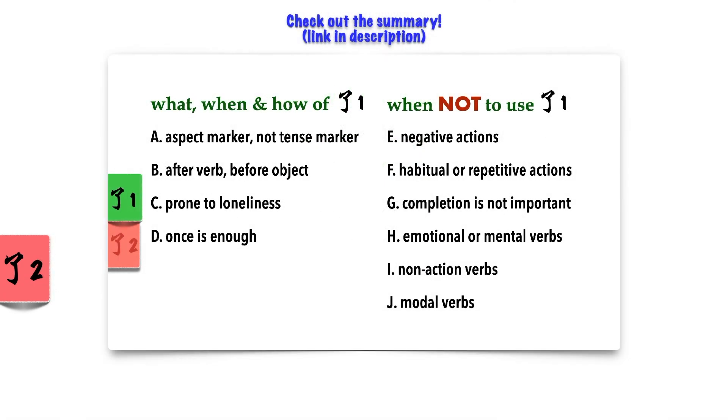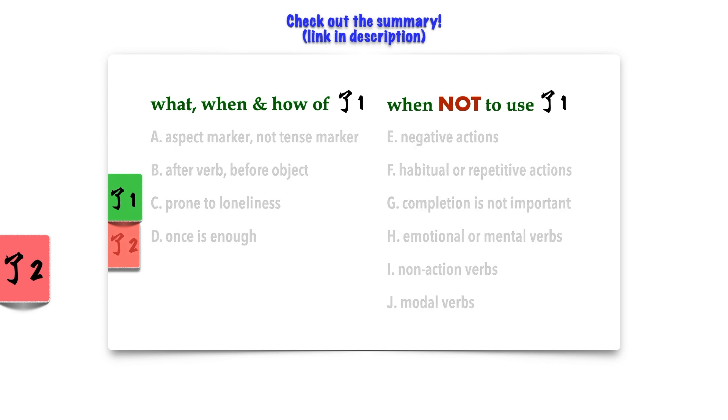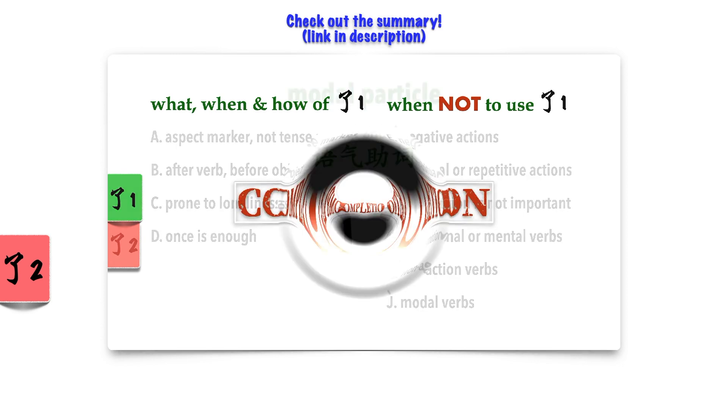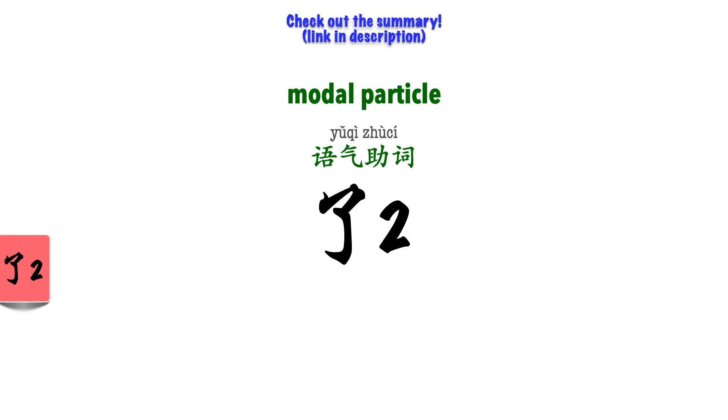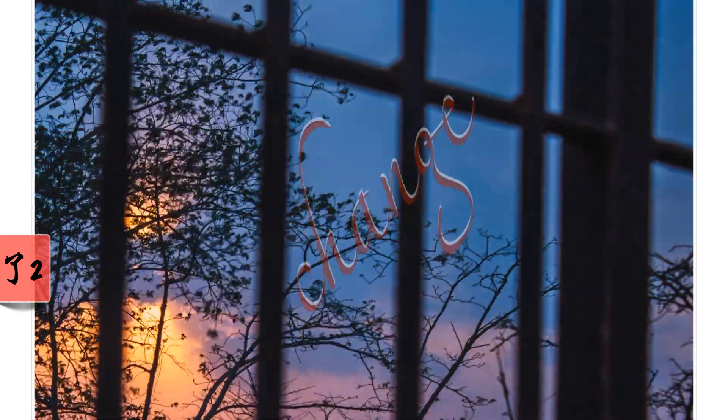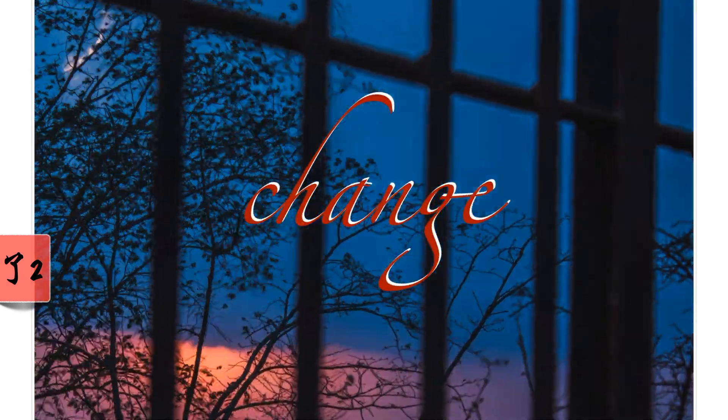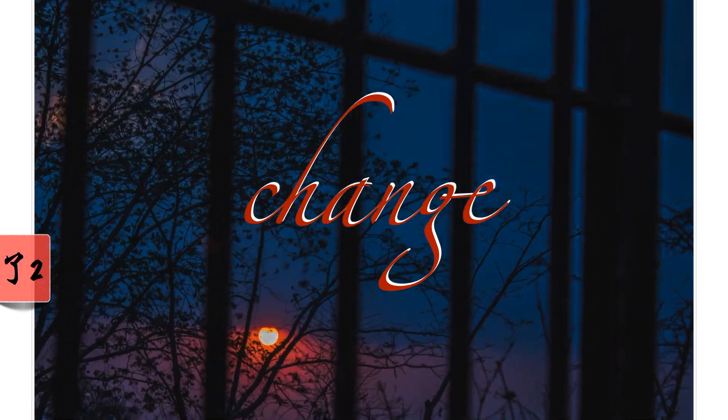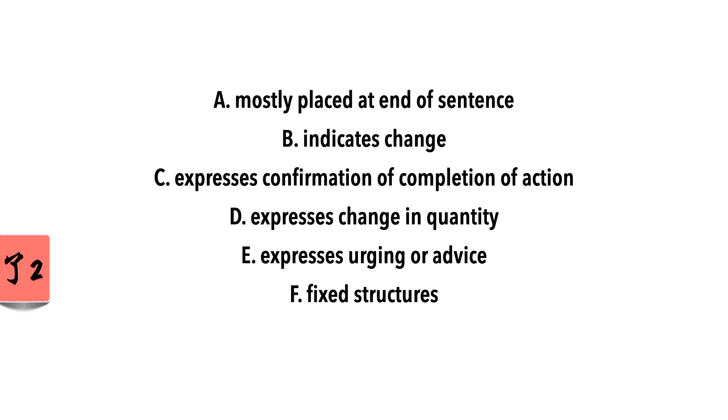Although there are many things to bear in mind about 勒1, fundamentally it only expresses one thing, the completion of an action. Similarly, 勒2, despite having quite a few meanings on a surface level, has basically one most important underlying feature that you should familiarize yourself with, and that is change. First off, here's an overview of what we're going to learn about 勒2. Some of the following might be baffling to a beginner, especially if you already have 勒 equals past tense mindset, so try to keep in mind its key function of expressing change.